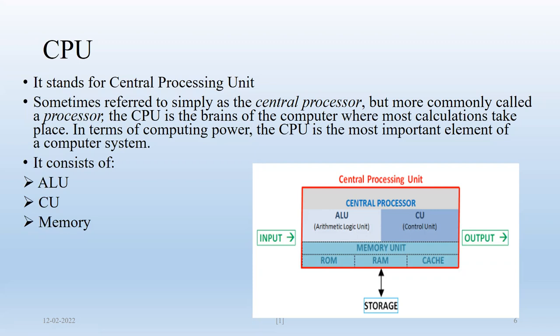The CPU is the brain of the computer, where most of the calculations take place. In terms of computing power, the CPU is the most important element of a computer system. It is the central element because all kinds of processing and calculations are performed by the CPU only.